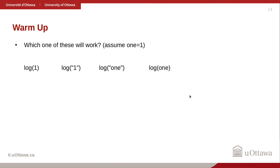Which of these will work? We have a function log that takes the logarithm of a number, and the object 'one' has been set to 1. log(1) works because 1 is a number. Trying to take the logarithm of a piece of text doesn't work. log(one) also works because the object 'one' has been assigned the value 1 — both log(1) and log(one) return zero.